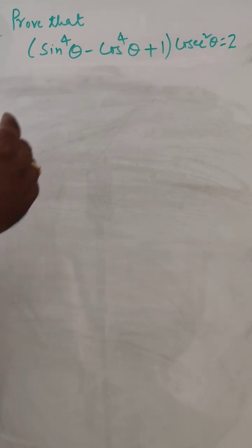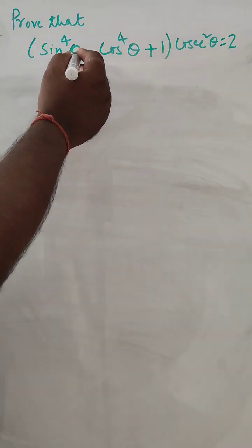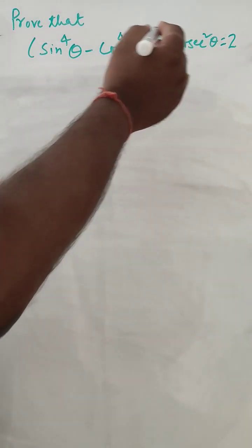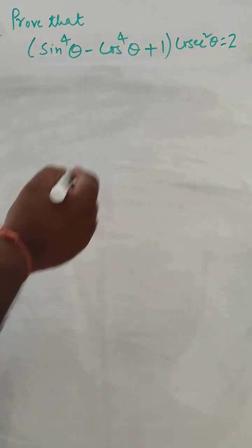Hello everyone. So today we are going to solve one problem of class 10th Trigonometric where sin to the power 4 theta minus cos to the power 4 theta plus 1 into cos square theta is equal to 2.